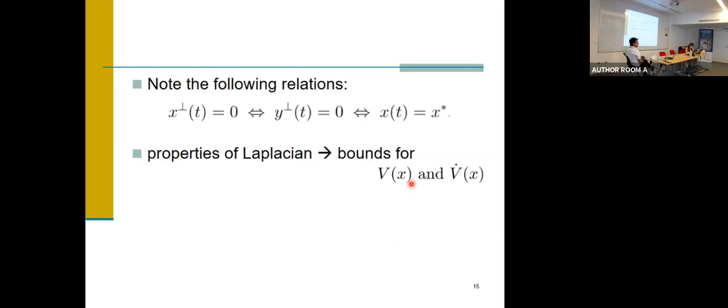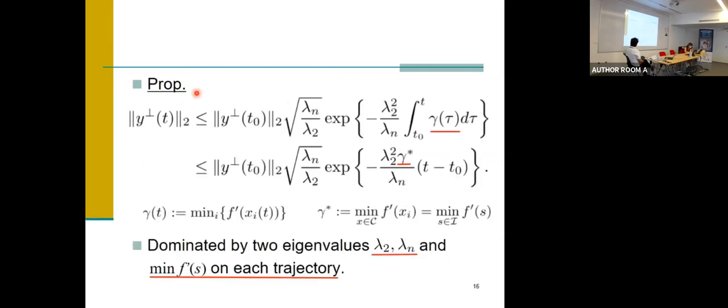And using the properties of Laplacian we can derive the bounds for Bx and B-dot-x. So using these bounds we can derive this inequality or this one. This one is larger than the former one but simpler. So anyway, the convergence rate can be governed by the eigenvalue lambda-2, lambda-n, and gamma is related to the F'.